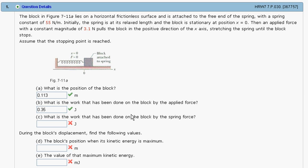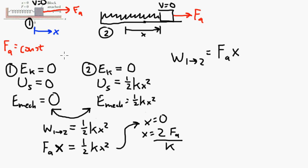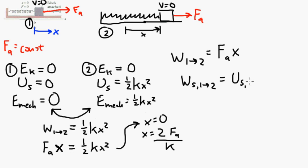What is the work that's been done on the block by the spring force? Here's the thing — there's a version of Part A where you treated the work done by the spring force as just work, and those two works had to add up to zero because it starts and stops with zero kinetic energy. Here we use potential energy to represent the spring force. The work done by the spring going from state 1 to state 2 is equal to the change in the spring's potential energy between 1 and 2. This is just the definition of potential energy.